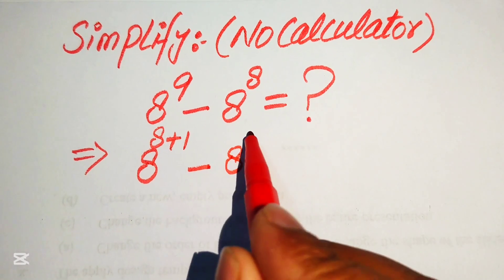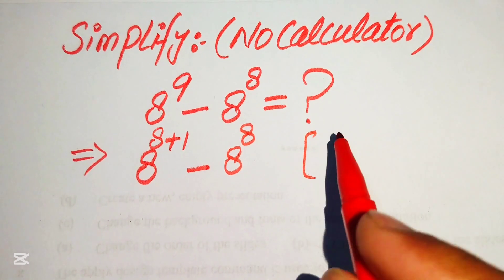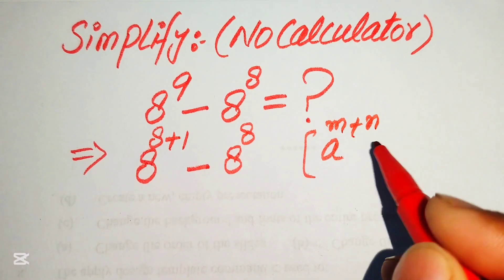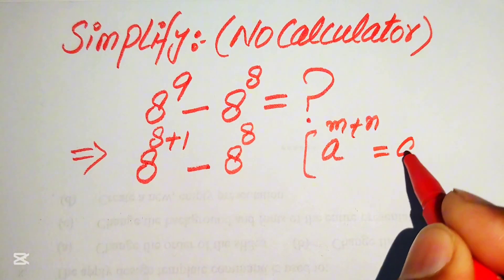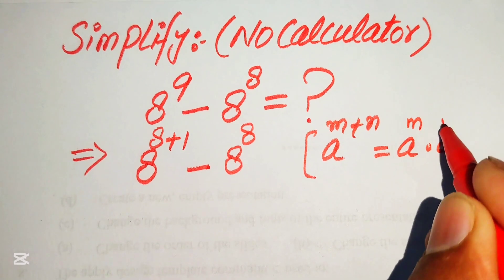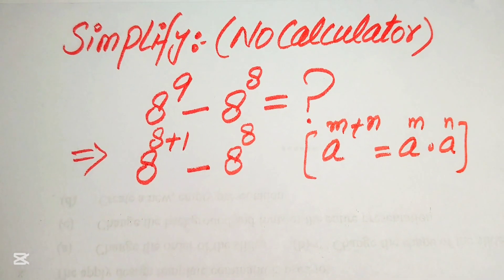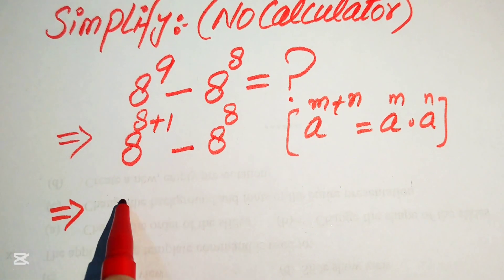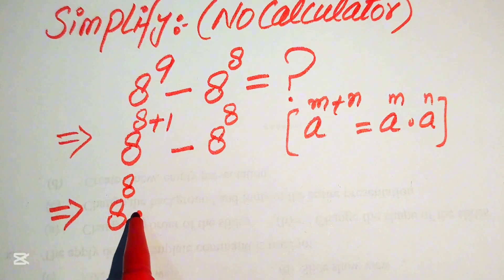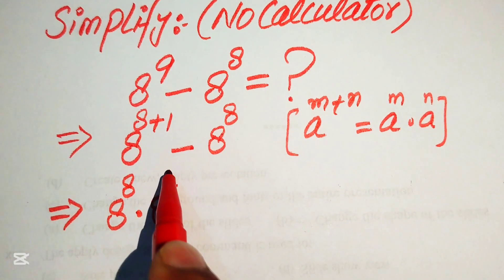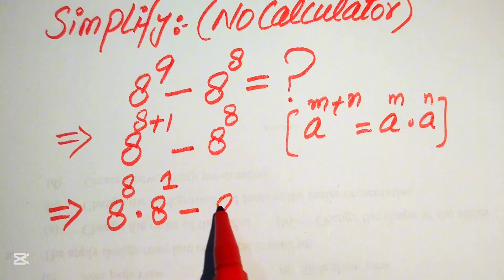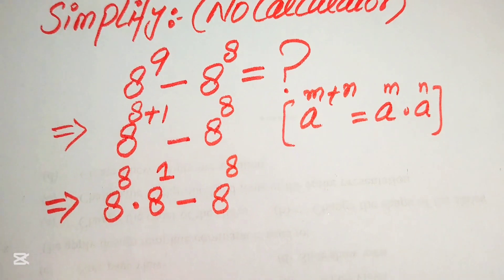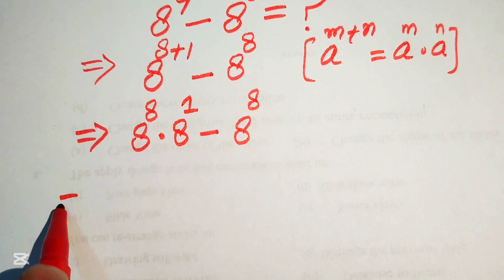We have 8 to the power of 8 plus 1, minus 8 to the power of 8. We use the exponent law: a to the power of m plus n equals a to the power of m multiplied by a to the power of n. According to this law, we break the exponent and write it as 8 to the power of 8 multiplied by 8 to the power of 1, minus 8 to the power of 8.